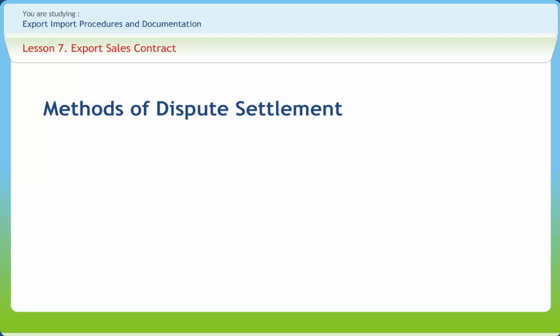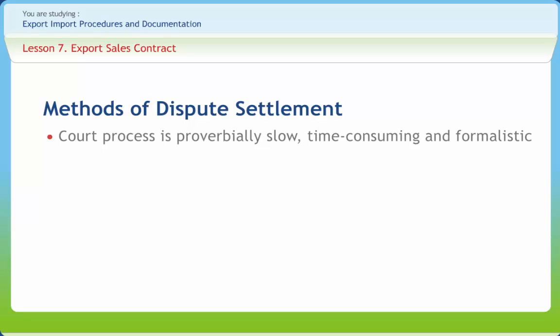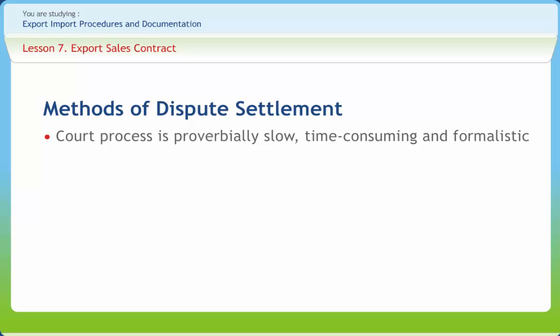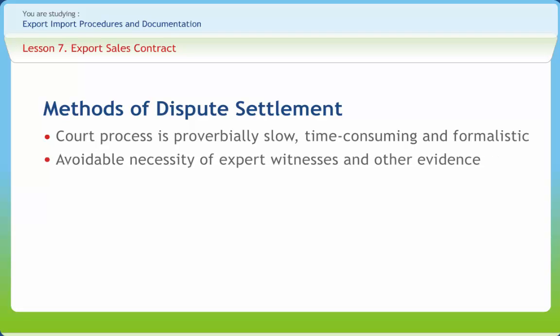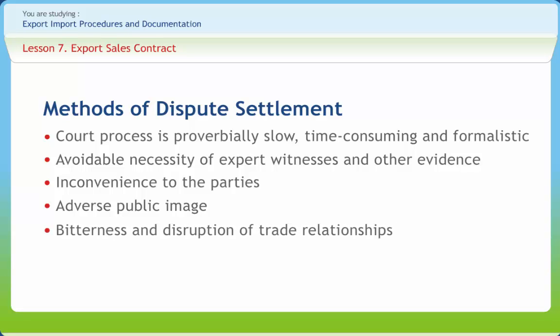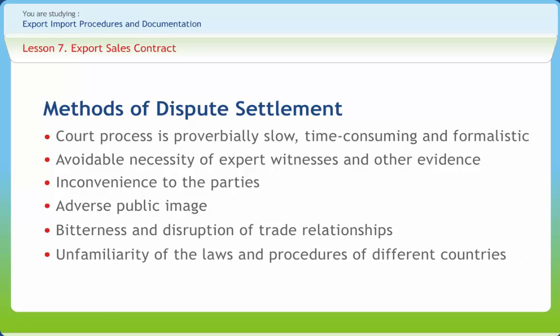There are two well-recognized methods for settlement of disputes: litigation and arbitration. Litigation is not suitable for settlement of trade disputes due to its time-consuming process, high costs, and uncertainty of the final decision. The basic limitations of litigation are: court process is proverbially slow, time-consuming and formalistic; avoidable necessity of expert witnesses and other evidence; inconvenience to the parties; adverse public image; bitterness and disruption of trade relationships; and unfamiliarity of the laws and procedures of different countries. These limitations encourage arbitration for the settlement of various disputes. The basic advantages of arbitration are quickness, inexpensiveness, promotion of goodwill, and guarantor of privacy.